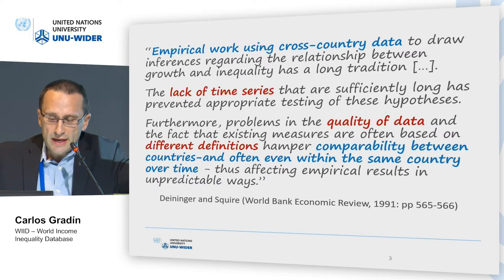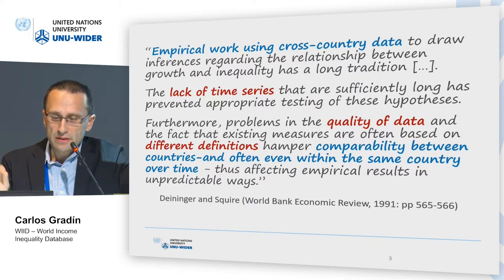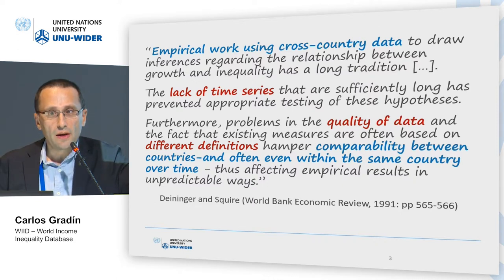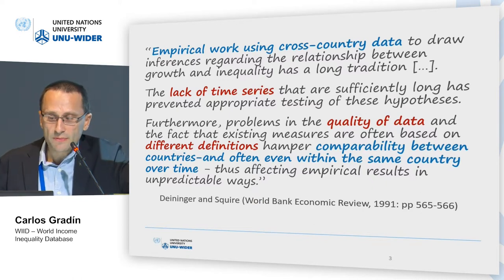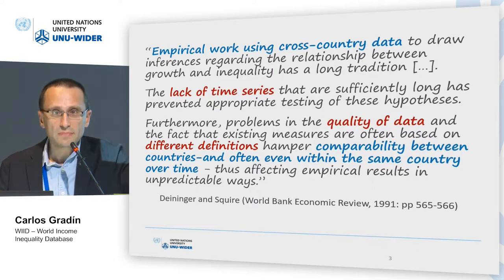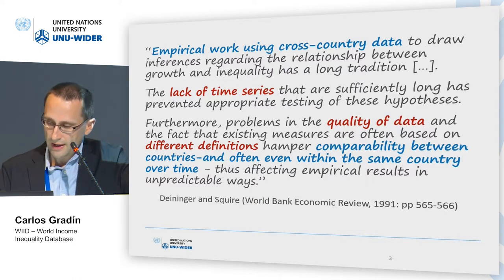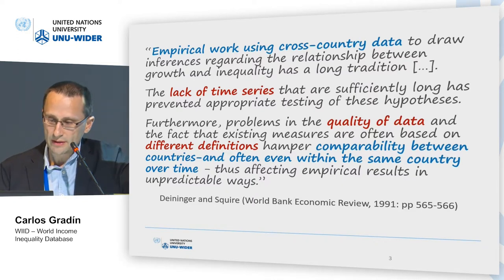In 1981, Deininger and Squire compiled a database for the World Bank. An assertion in that paper is still quite relevant now: empirical work using cross-country data, the lack of time series — especially for the hot topic at that time, the relationship between economic growth and inequality — faced problems with the quality of data that make comparability between countries very difficult, or even within the same country over time. I think, many years after that paper was published, this is unfortunately still true. Even now, the range of topics for which we want this data is probably much wider than it was at that time.